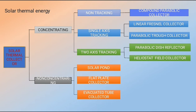Dual-axis tracking systems track the sun in two directions — elevation and azimuth — capturing radiation from all four directions: left, right, front, and back. Examples include the parabolic dish reflector and the heliostat field collector. The second major type is non-concentrating solar thermal.